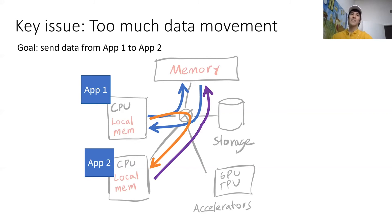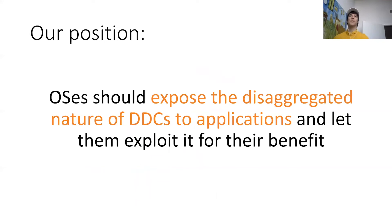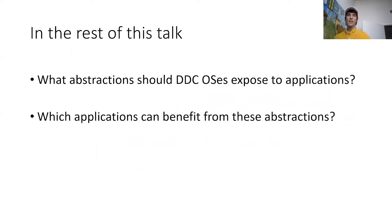So our position in this work is that applications should be modified to run on this non-traditional hardware. And to do that, we need to make sure that the operating system exposes enough information and functionality so that these applications can actually exploit it. In the rest of this talk, I will discuss what abstractions DDC operating systems should expose to applications, and then I'm going to give you a couple of examples of applications that can actually benefit from these abstractions.